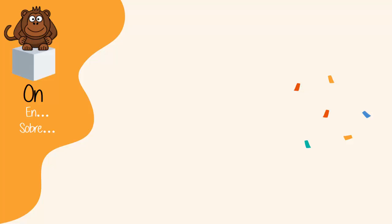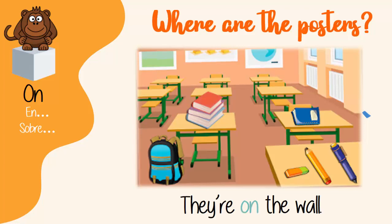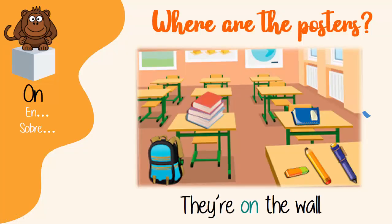We also have ON. ON también se puede traducir como EN, pero quizá la mejor traducción sería SOBRE. Porque este ON no es que esté dentro de, sino que está sobre, está encima, toca la superficie. For example, where are the posters? They are ON THE WALL. Están sobre la pared, tocando la superficie.